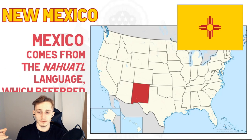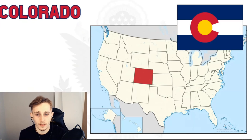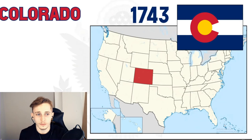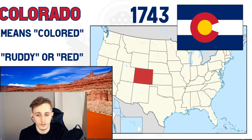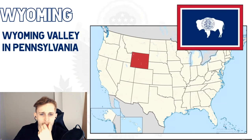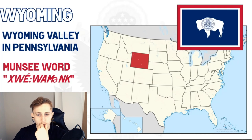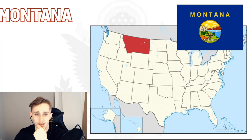Colorado was also named by the Spanish in 1743 — it roughly means 'colored,' but in this case meant 'ruddy' or 'red,' originally referring to the Colorado River and its muddy color. Wyoming gets its name from the Wyoming Valley in Pennsylvania, which itself got its name from a Munsee native word literally meaning 'big river flat.' Montana is again super straightforward — it means 'mountain' in Spanish. 'Montaña del Norte' was the name given by early Spanish explorers to the entire mountainous region of western North America.